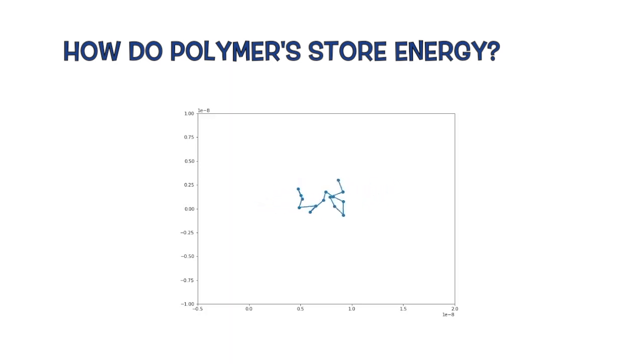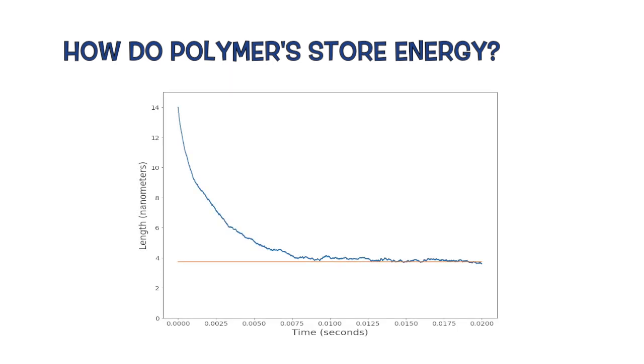If we repeat these simulations many times, we can graph the average extension of a polymer as a function of time, and what we find is that it contracts to an equilibrium length, which is equal to the link length times the square root of the number of beads.